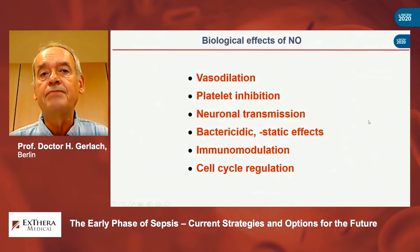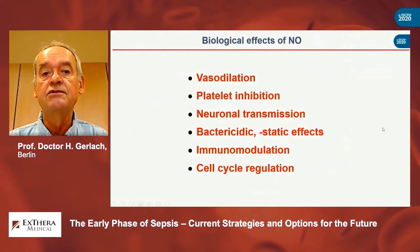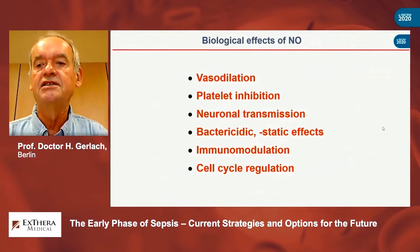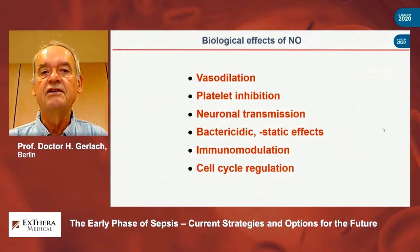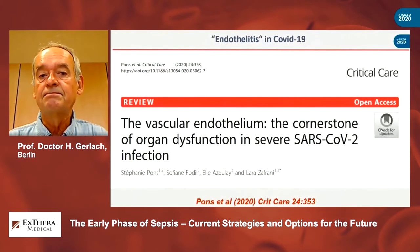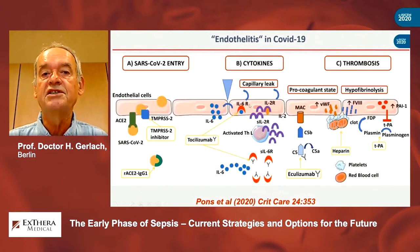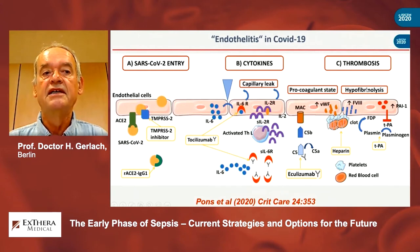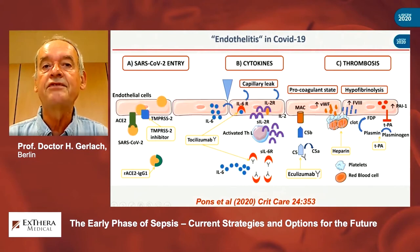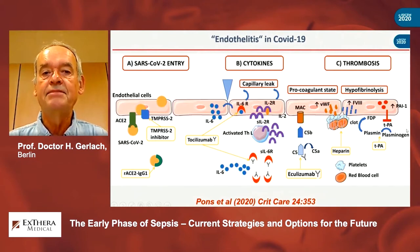There are several biological effects of nitric oxide: vasodilation, platelet inhibition, neuronal transmission, but also bacteriostatic and bacteriocidal effects, immunomodulation, and cell cycle regulation. This also plays a role in SARS-CoV-2 infection. Here you see again that all these things — capillary leak, procoagulant effects, hypofibrinolysis — are very important. So you have this whole picture of endothelitis in COVID-19 patients.